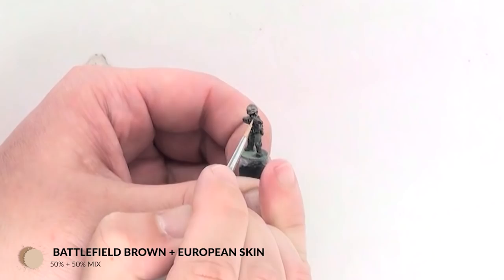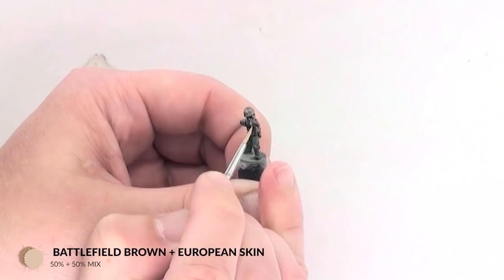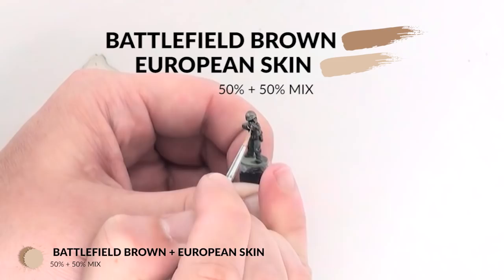The first stage is that I'll mix about a 50-50 mix of Battlefield Brown and European skin. As you'll see, a creamy brown color.